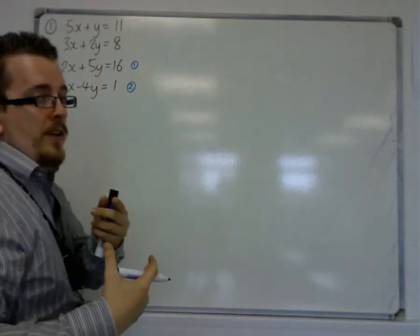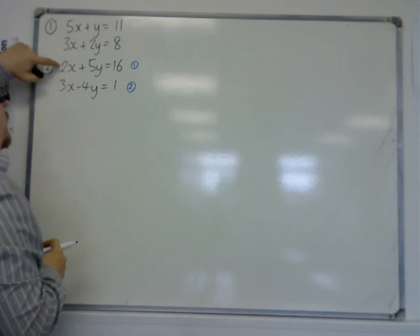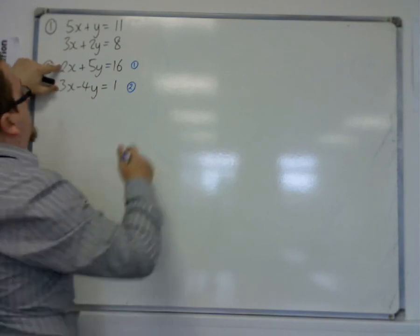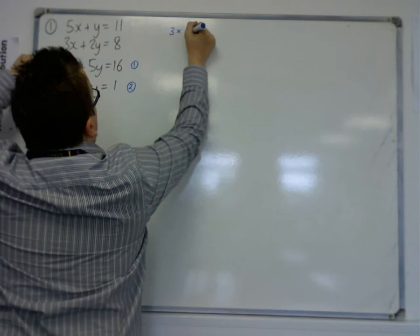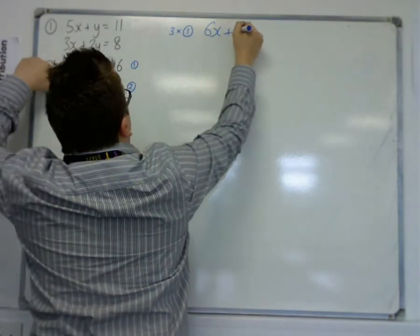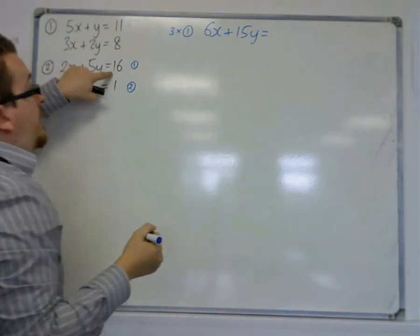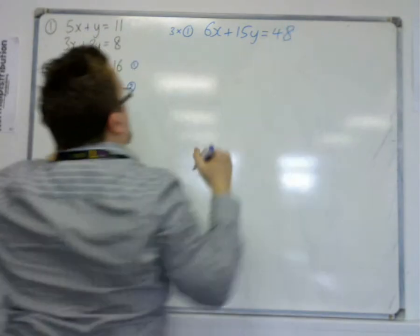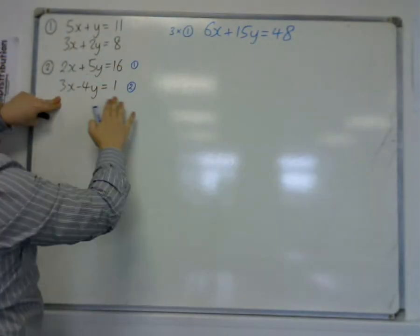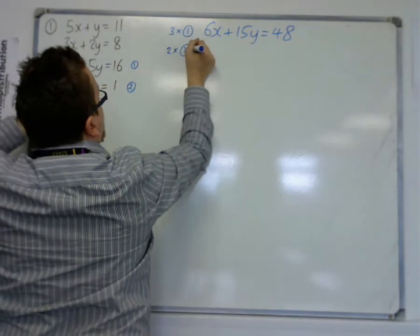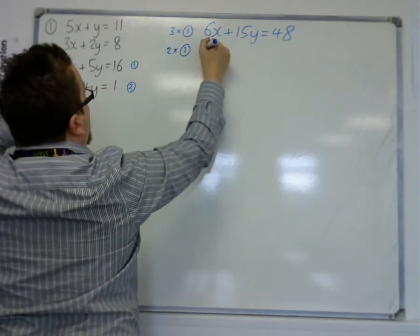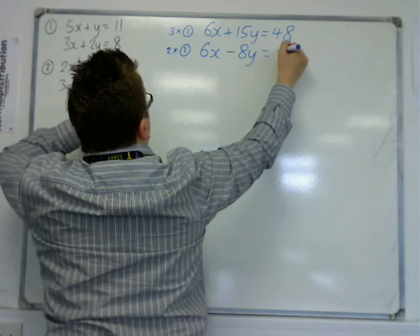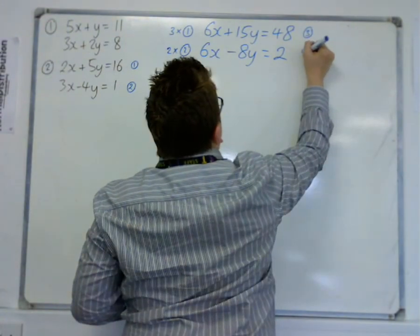So in order to get the x's the same, this is 2x, this is 3x. So if I multiply this one by 3, I can get 6x. Multiply that one by 2, I can get 6x. So I need to get them both the same. So I'm going to multiply equation 1 by 3. So we get 6x plus 15y is equal to, well, 16 lots of 3 is 48. A little bit of mental arithmetic there. Then I'm going to multiply equation 2 by 2. So 2 lots of 2. So we get 3x times 2 is 6x, take away 8y is equal to 2. So I'm going to call this equation 3 and this one equation 4.